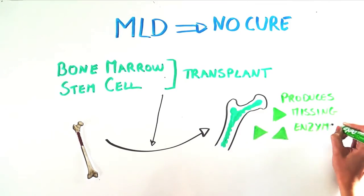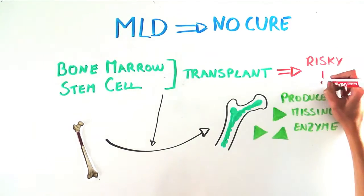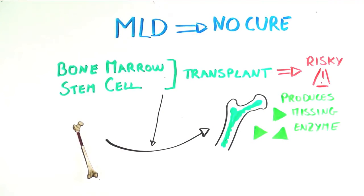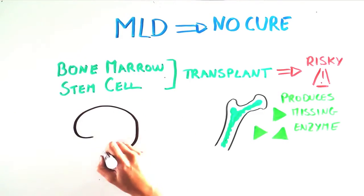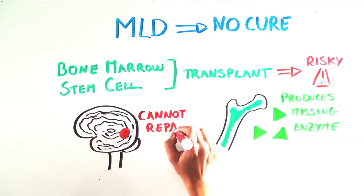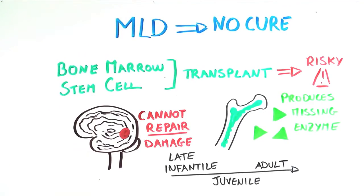Transplant for metabolic disease has improved over the years, but is still extremely risky. Because transplant cannot repair the damage already done to the brain and peripheral nerves, it is not effective for the late infantile form of MLD once symptoms have appeared, because of the rapid progression of this form of the disease.